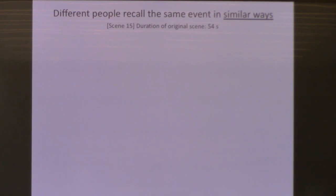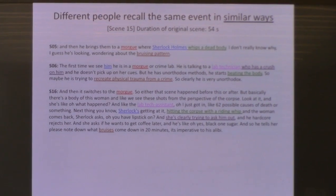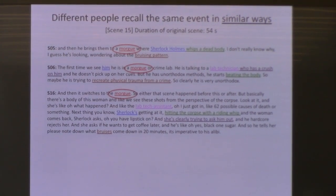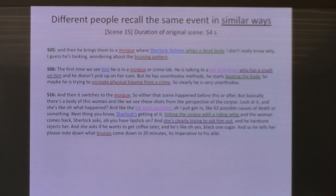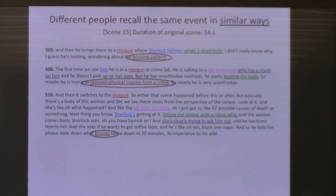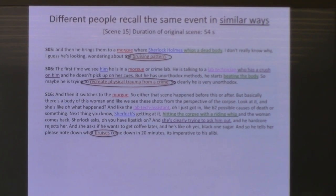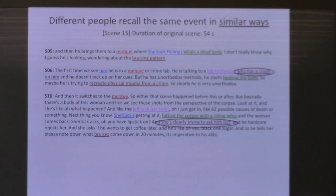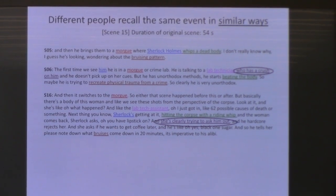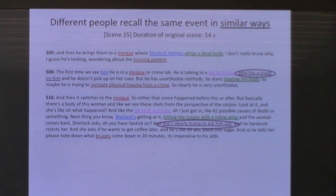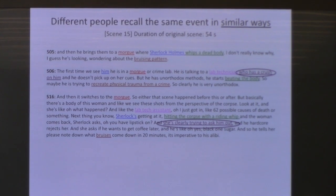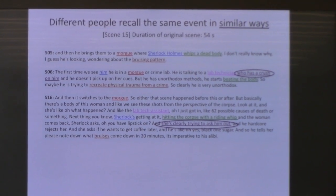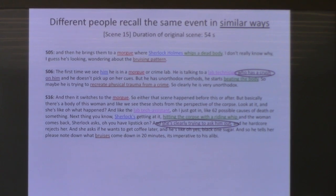But there are similarities as well. Everybody mentions where this scene is — in the morgue — and that Sherlock was there and what he was doing. Everybody takes a guess at why he's doing it. And two of these people at least remember that there's another person in the scene and what that person's interaction with Sherlock was. There are these key elements of the scenario that kind of make it what it is — if you tried to swap out one of the people, the location, or the goals in this scene, you might reasonably call it a different scene.